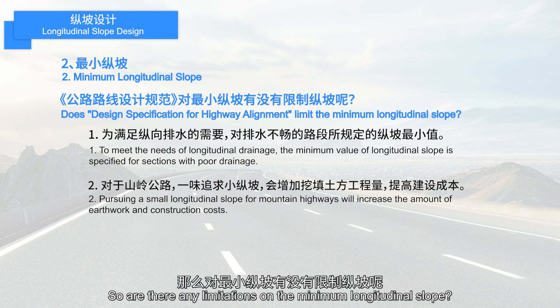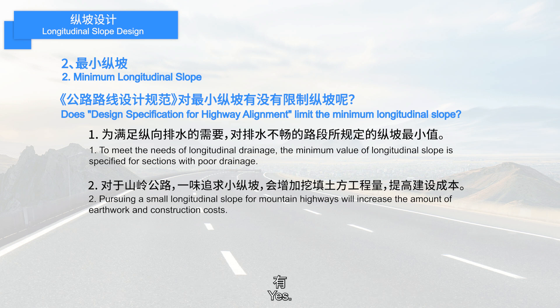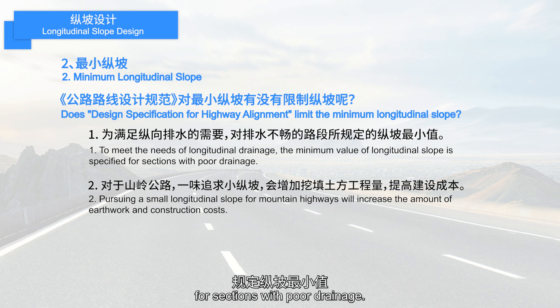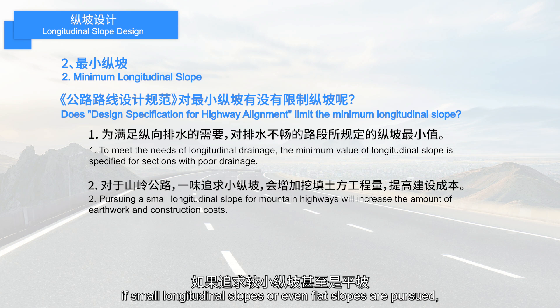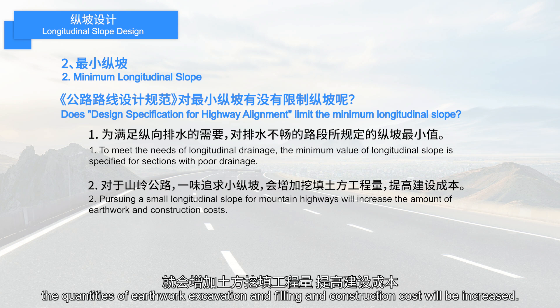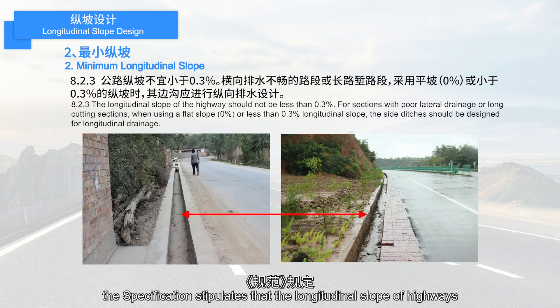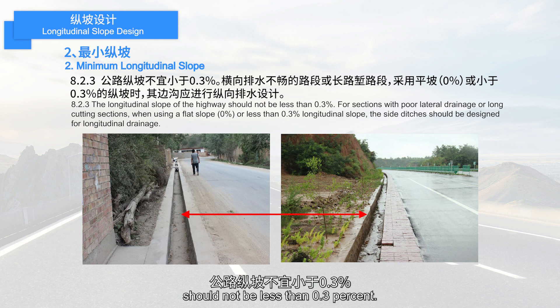Are there any limitations on the minimum longitudinal slope? Yes. In order to meet the needs of longitudinal drainage, it is necessary to specify the minimum longitudinal slope for sections with poor drainage. For mountain highways, if small longitudinal slopes or even flat slopes are pursued, the quantities of earthwork excavation, filling, and construction costs will increase. Therefore, the specification stipulates that the longitudinal slope of highways should not be less than 0.3%.